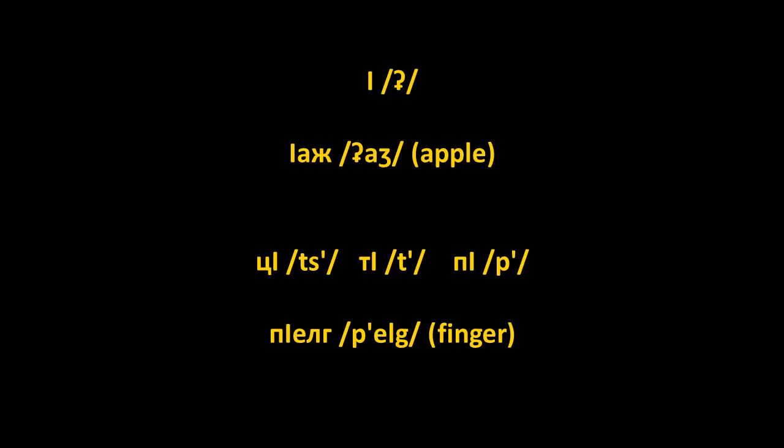You can see other letters below: tsa, tsa', p'a. The effect of a palochka after a letter is that it forms an ejective consonant. So a word like pelg means finger.